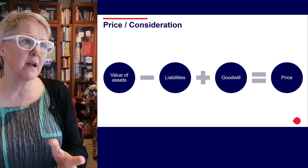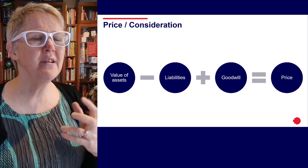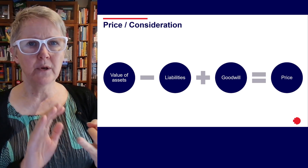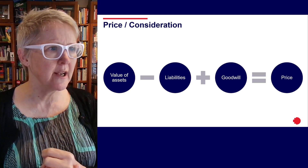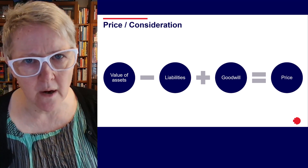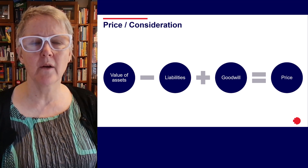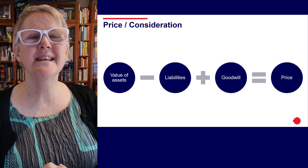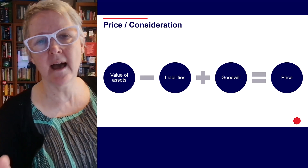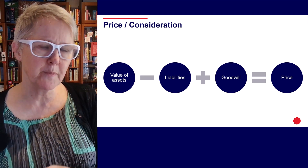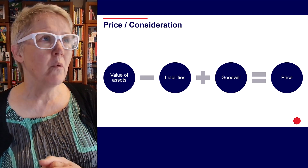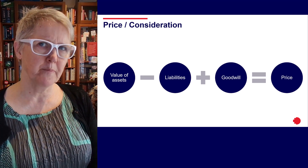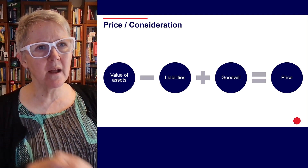When deciding what price or consideration is, my oversimplified formula is: value of assets (or underlying assets in a share transaction) less liabilities, plus goodwill, equals price. Often price is determined as a multiplier of revenue or profit. The way I think about multipliers is: how many years will it take to recoup that level of profitability? So if we're talking about an EBIT multiplier of two, two years' worth of profits will pay for the business — which would largely represent a pretty stable, largely uninteresting business.